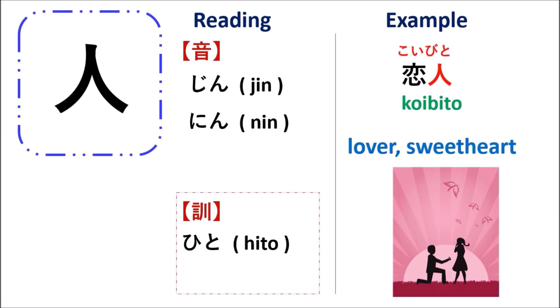The next word is koibito, meaning 'lover' or 'sweetheart.' If you are a boy and say this to a girl, it means 'boyfriend' or 'girlfriend.' In this word, koi means 'love,' so when you put 'love' and 'person' together, that means a love person — so it means 'lover,' 'sweetheart,' 'boyfriend,' or 'girlfriend.'